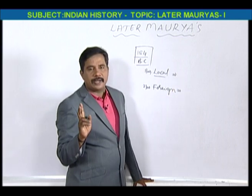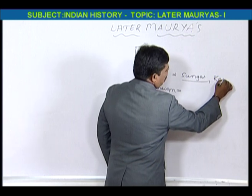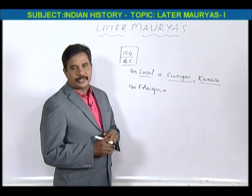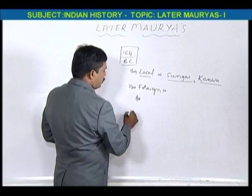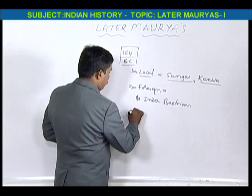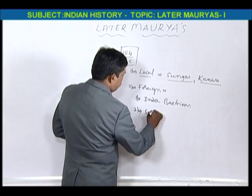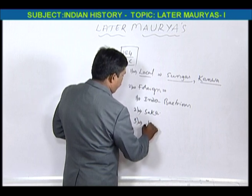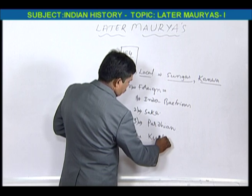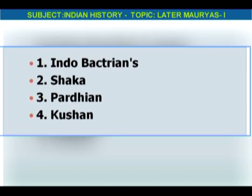Local kingdoms are two — that is, Sungas and Kanvas. These are called local dynasties. And foreign dynasties — we have Indobactrians, Shaka, Parthian, and Kushans. So these are the foreign kingdoms.